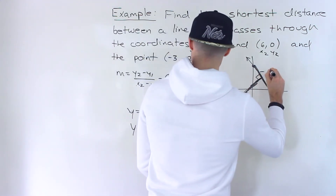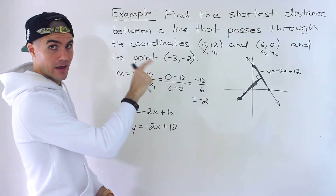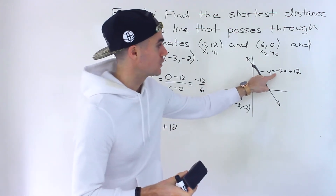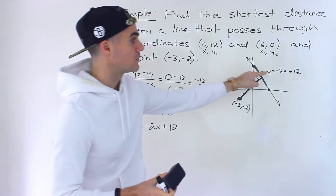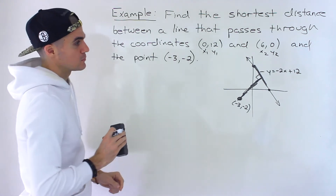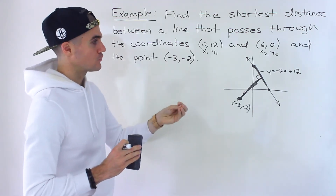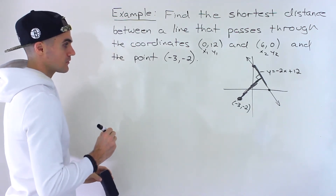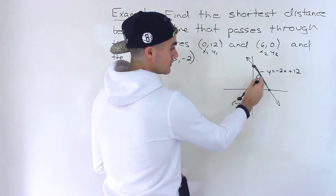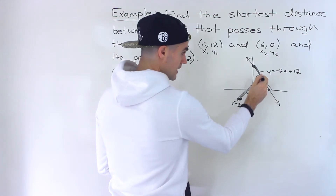So we have y = -2x + b. Since we're given the point (0, 12), the y-intercept is just 12, so the equation of the line is y = -2x + 12. Now it becomes like the examples we've gone through where we're given the equation and the point. Sometimes you won't be given this equation and you'll have to find it first, but once you have it we go through the same steps. We need to find the equation of the perpendicular line, then find the intersection point, and then find the distance.